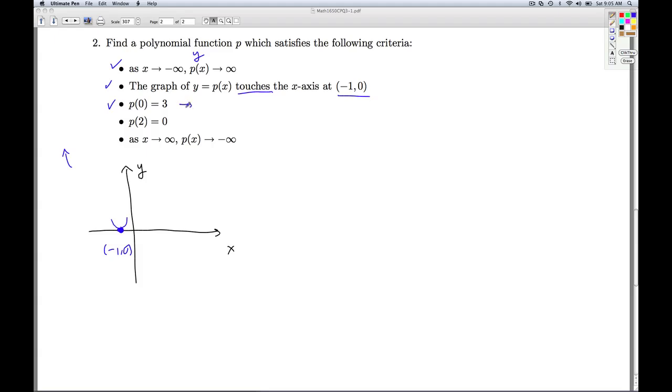Now we're told P of 0 is 3. Well, that means that the point 0, 3 is on the graph. In other words, that's the y-intercept, 0, 3.